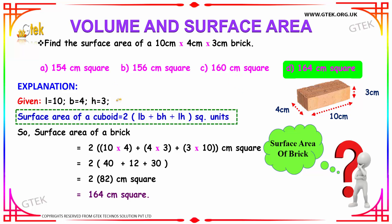To find the surface area of a brick, the brick has the shape of a cuboid. To find the surface area of a cuboid, you have the formula: 2 into (LB + BH + LH) square units.